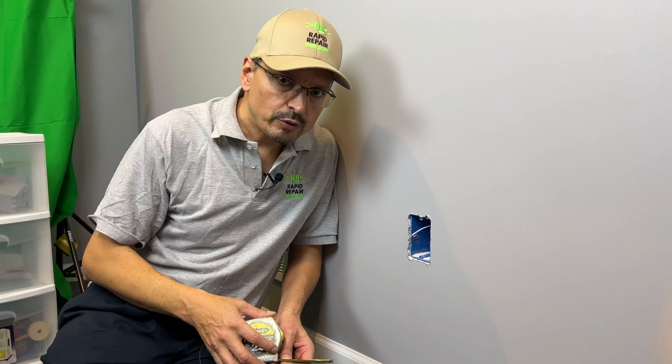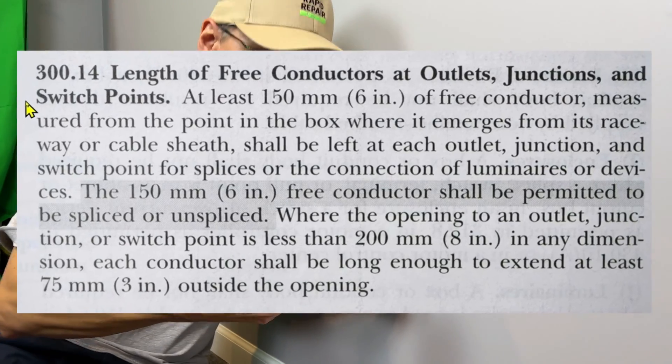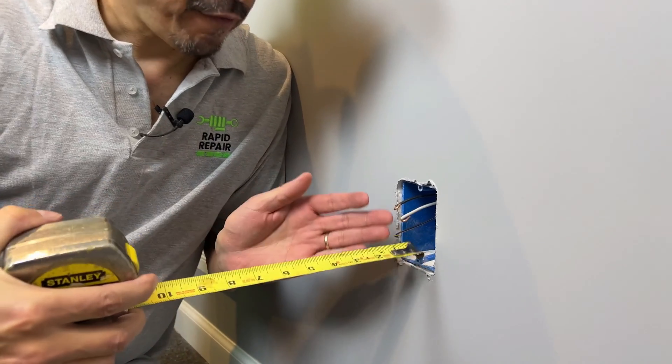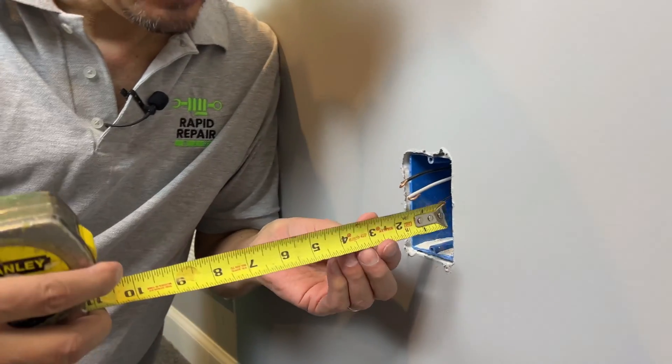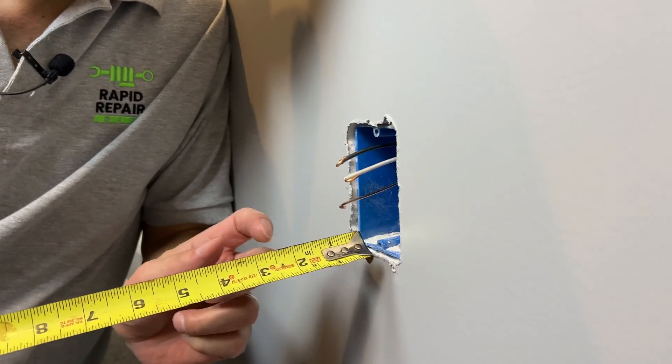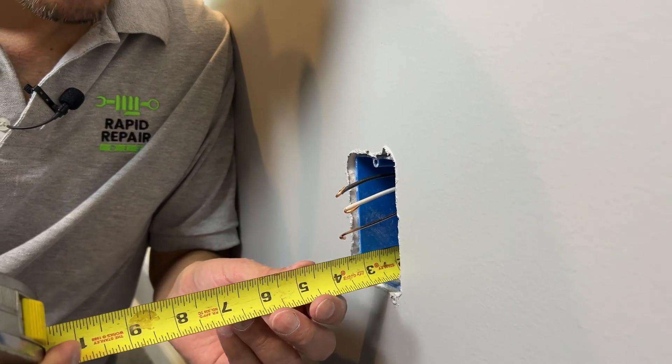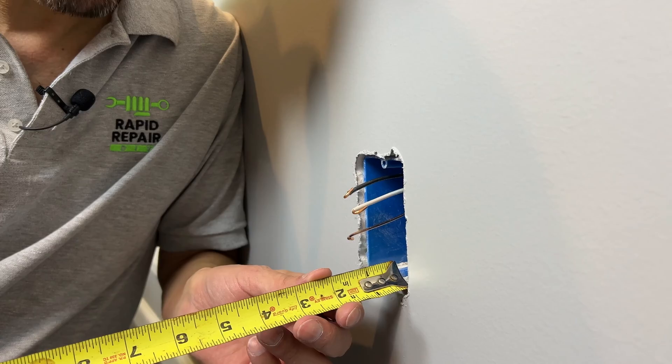The National Electrical Code states that you should have six inches of wire from the back of the box to the front and a minimum of three inches. Hope you can see that from the front to the inside of the room.